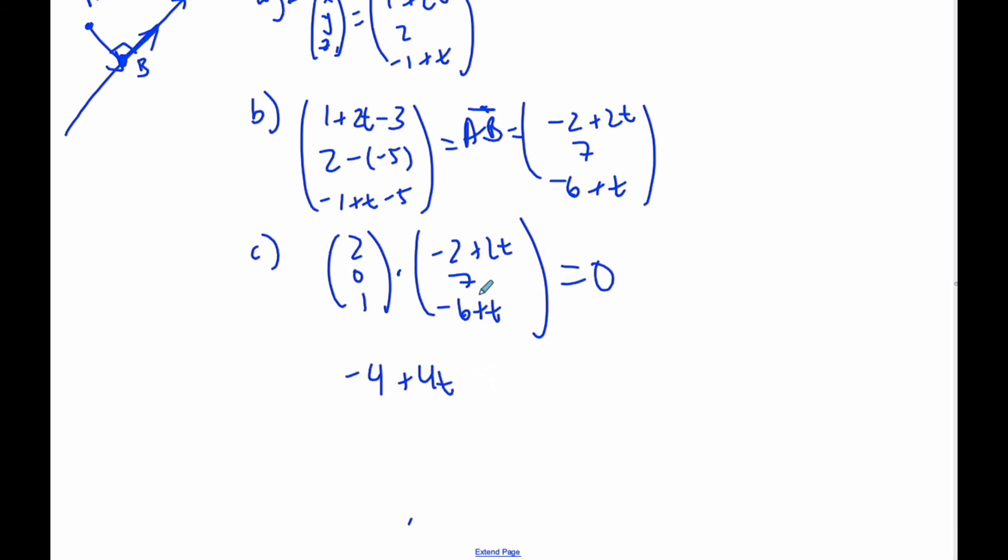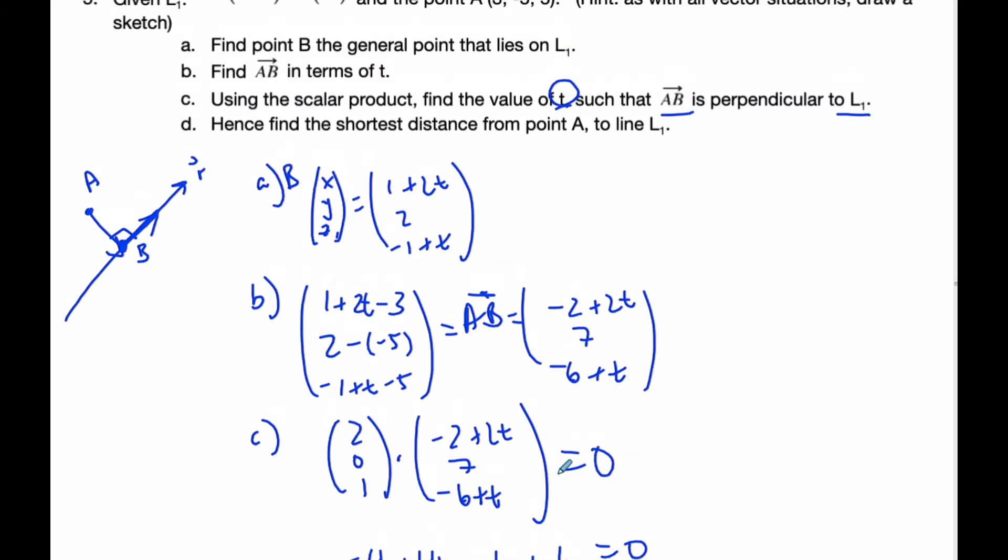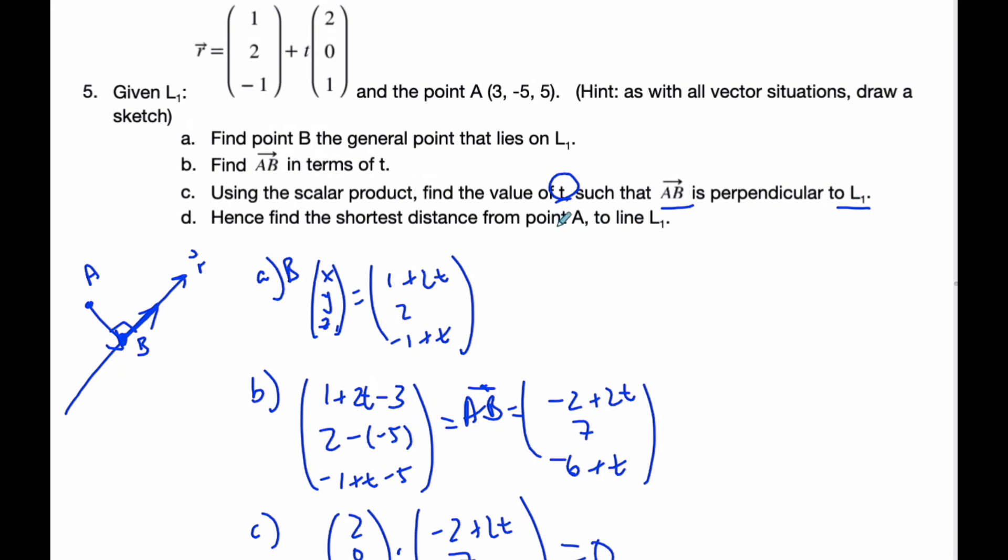Then I get -4+4t plus 0 minus 6+t equals 0. If I rearrange this, I get 5t equals 10, and so t is 2. t equals 2 means that they are perpendicular.